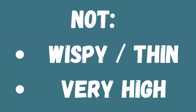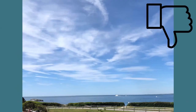What we're not looking for — or that will not help us on the race course — are wispy or very thin clouds, and clouds that are very high up in the atmosphere. Here's an example of very thin wispy high clouds. These clouds are so high up in the atmosphere that they're actually mostly made of ice, and they don't affect the surface wind really at all.